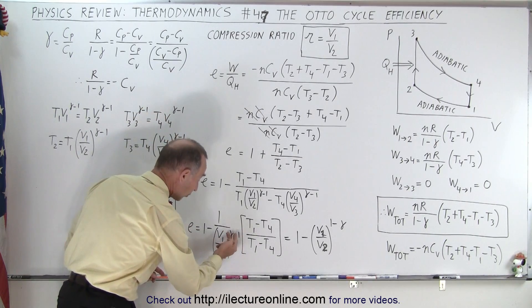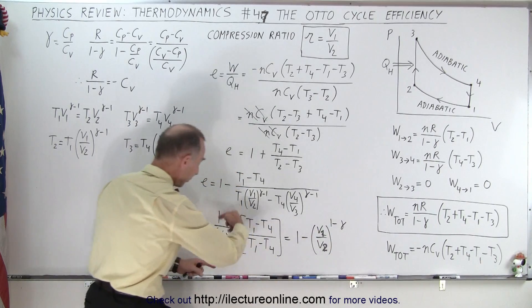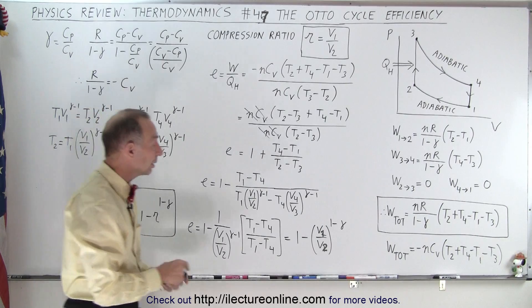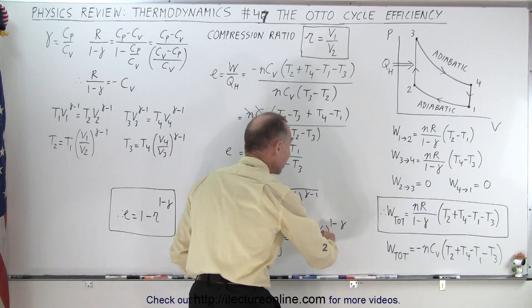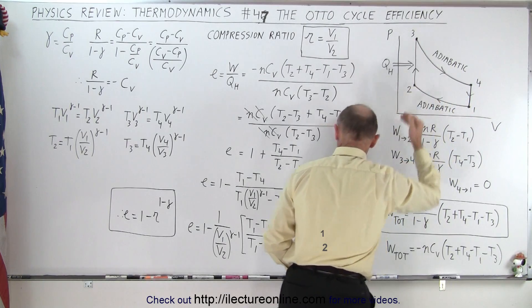We end up with 1 minus 1 over V1 over V2 to the gamma minus 1. But if we now reverse the order, take that into a negative, that becomes 1 minus gamma, and we can flip this over as V2 over V1. Notice, V2 over V1 is the compression ratio where we compress the volume at 1 to the volume at 2.